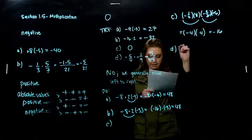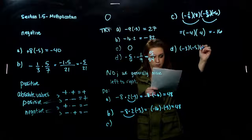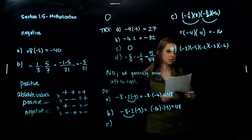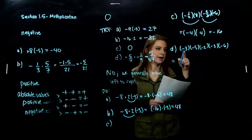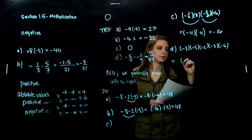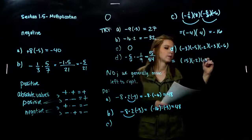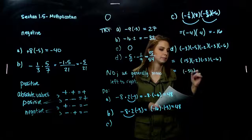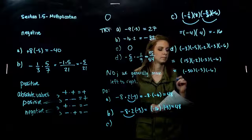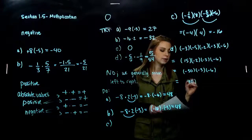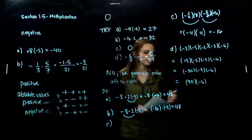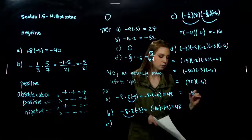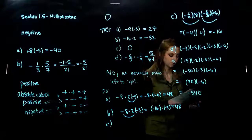For part D: negative 3, negative 5, negative 2, negative 3, negative 6. Taking it left to right: negative times negative gives positive 15. Positive 15 times negative 2 gives negative 30. Negative 30 times negative 3 gives positive 90. Negative 6 times positive 90 — nine times six is 54, and we have a factor of 10 — gives negative 540.